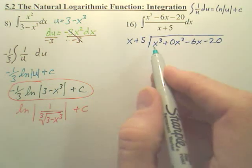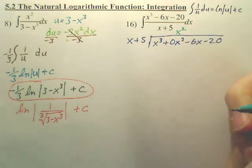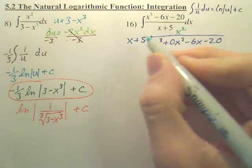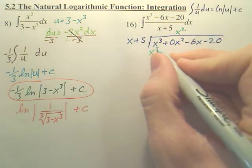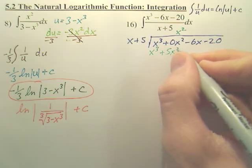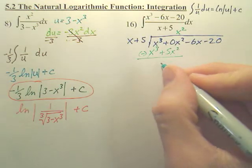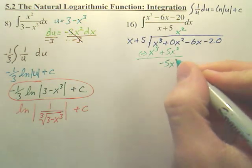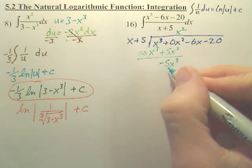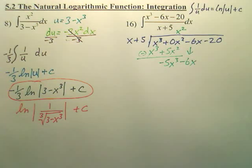What times x gives us x to the third? x squared times x gives us x to the third, and x squared times 5 gives us 5x squared. And then we subtract down. It's gone. A lot of people mess up because they don't subtract down. They make that a positive 5x cubed.